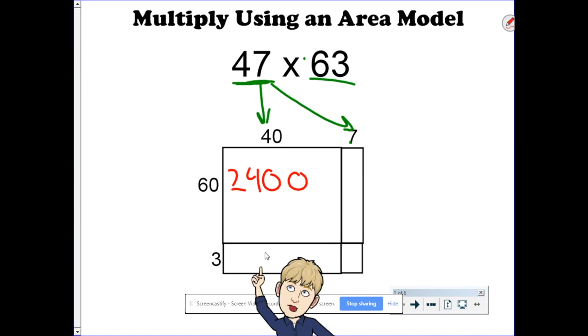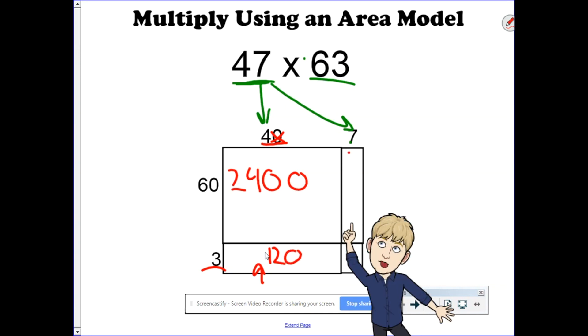If we move down to this box, it's 40 times 3. Let's ignore the zero. 4 times 3 is 12. Tack on the zero makes it 120. Over in this box, it's 60 times 7. 6 times 7 is 42. Tack on the zero, that's 420.